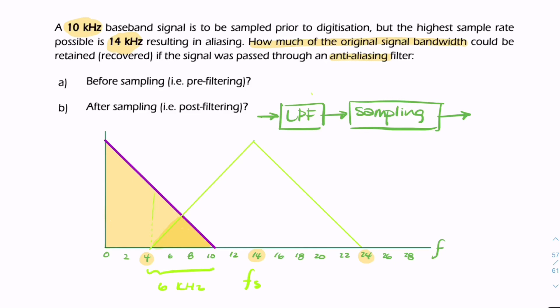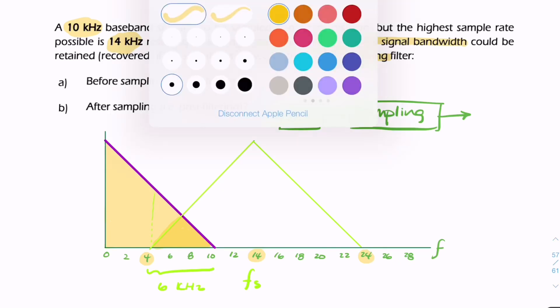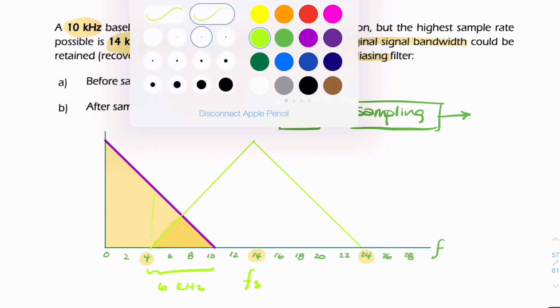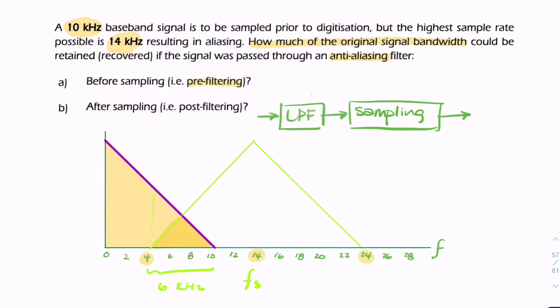—a so-called pre-filter or anti-aliasing filter—before the sampling process. We could set the cutoff frequency at 7 kHz, which is half of 14 kHz. If this is the low pass filter,